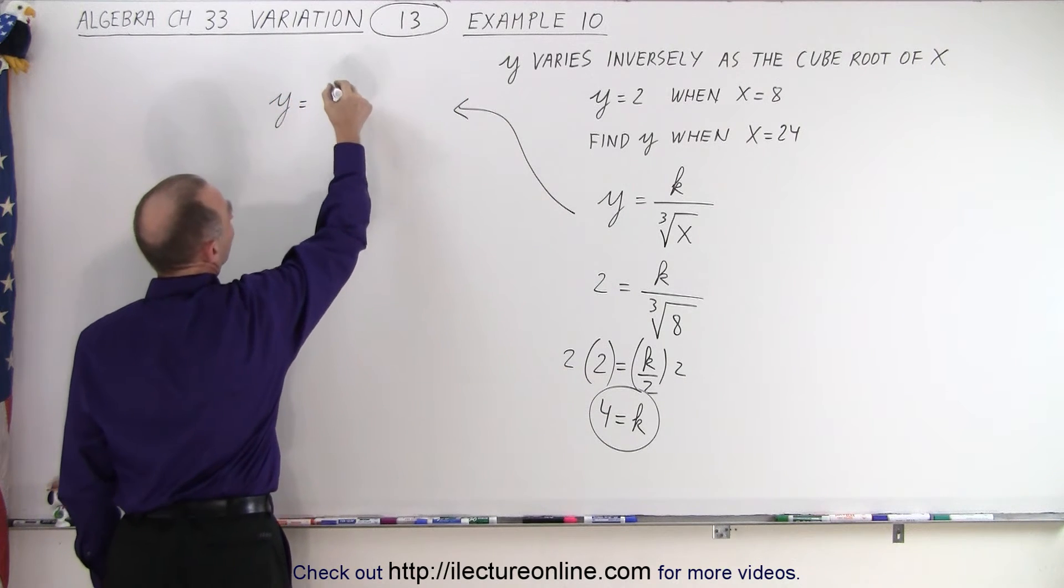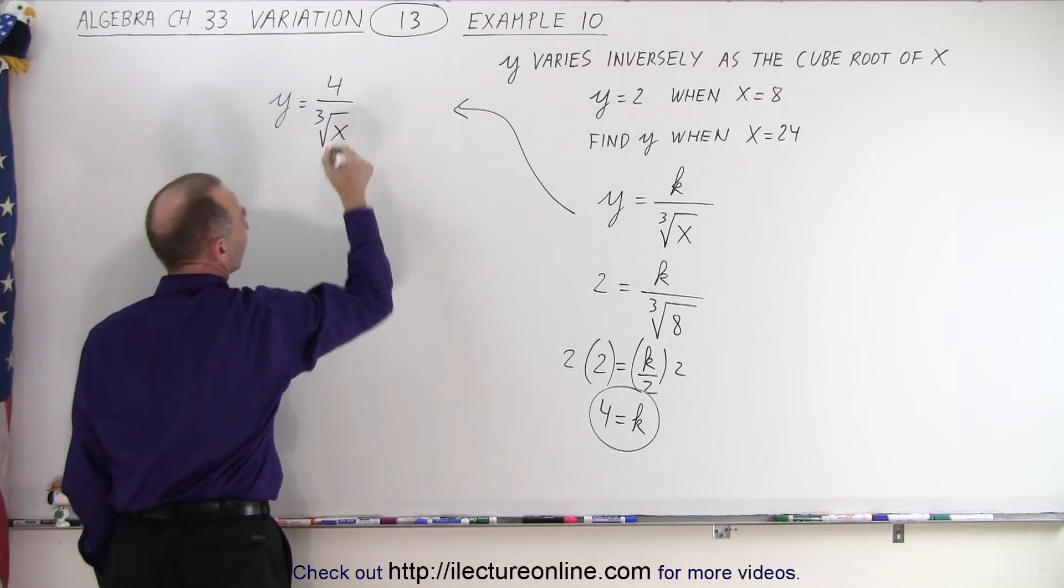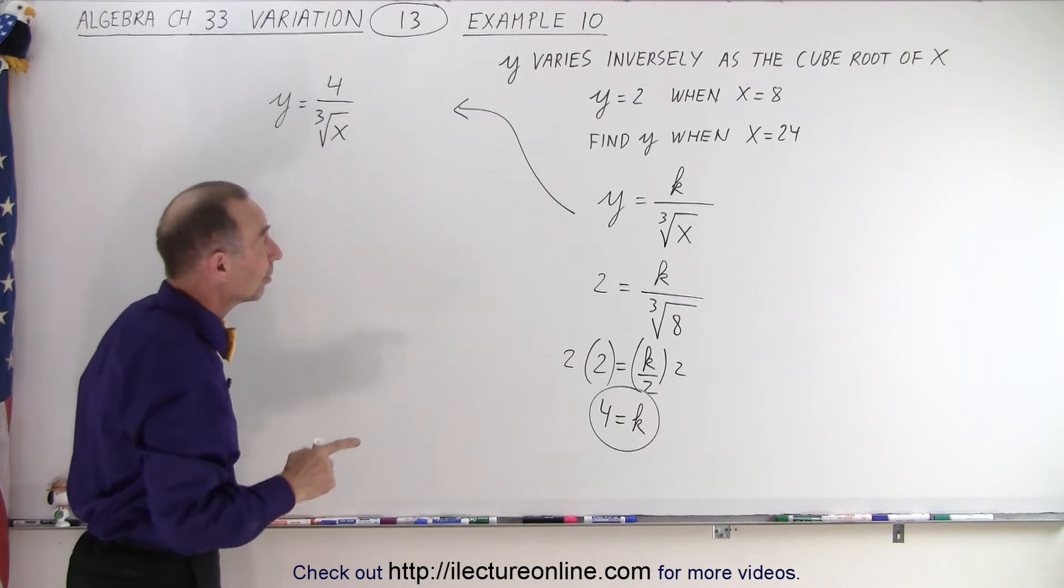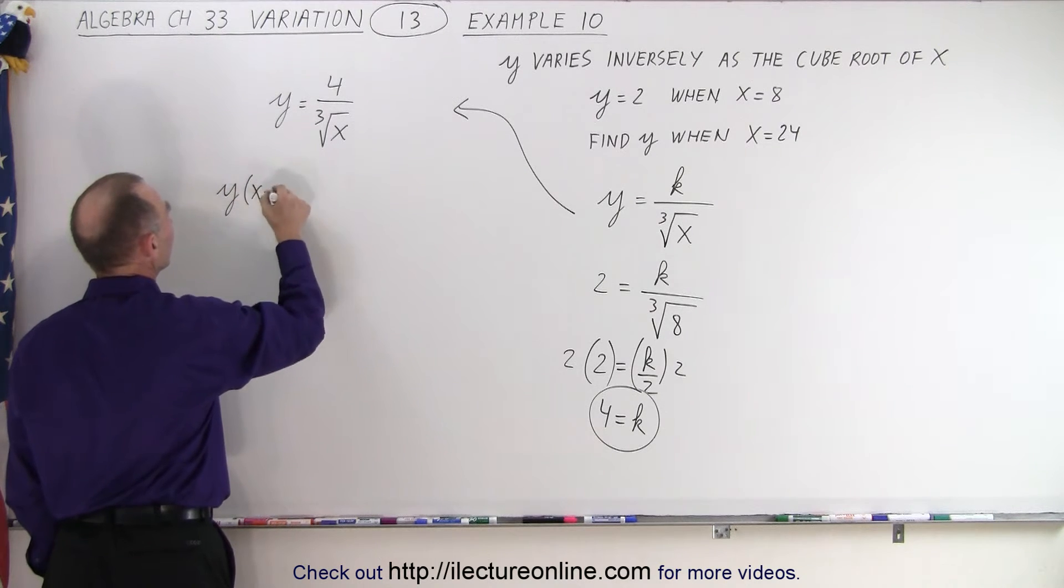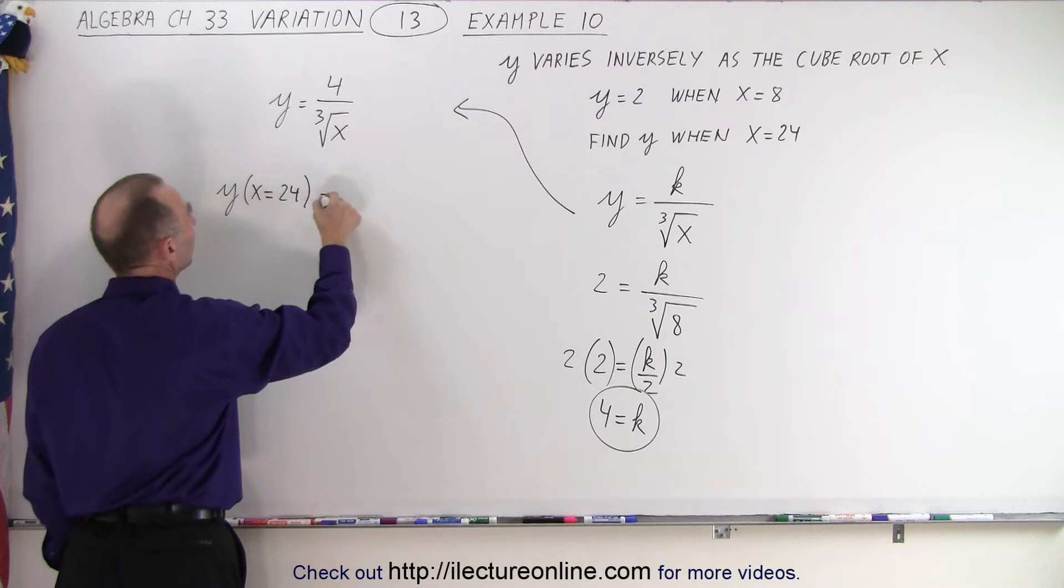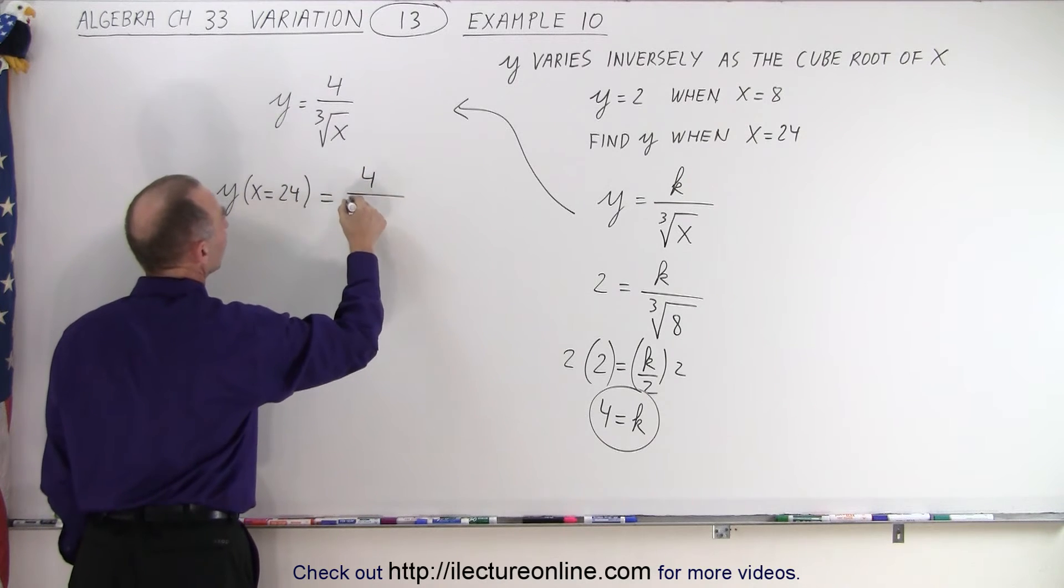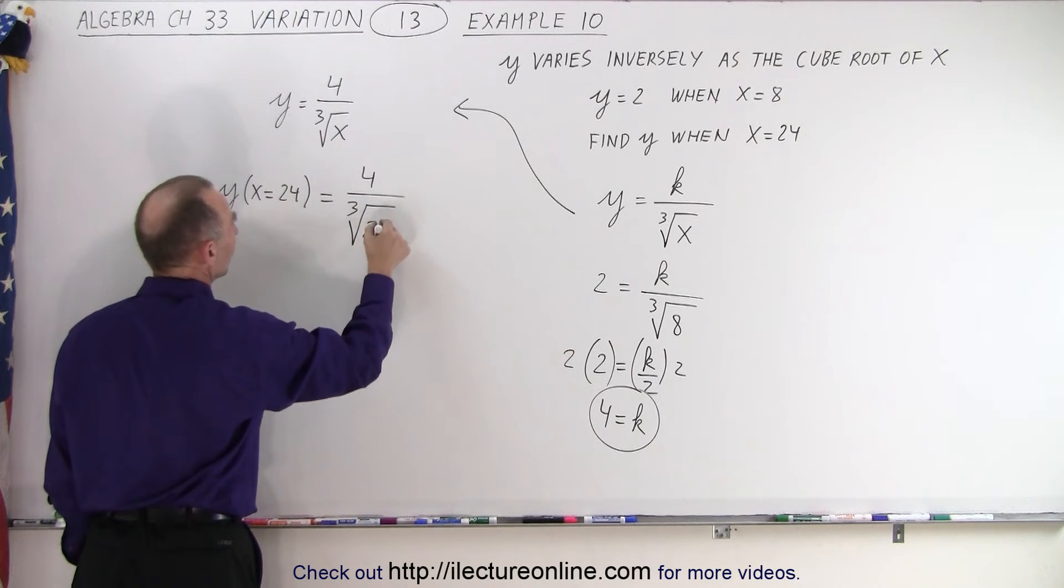we have y is equal to 4 divided by the cube root of x. Now we can find y when x equals 24. So y, when x equals 24, is equal to 4 divided by the cube root of x, which in this case is 24.